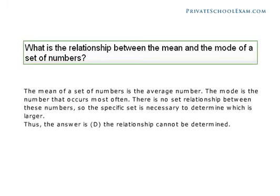What is the relationship between the mean and the mode of a set of numbers? The mean of a set of numbers is the average number. The mode is the number that occurs most often. There is no set relationship between these numbers, so the specific set is necessary to determine which is larger. Thus, the answer is D, the relationship cannot be determined.